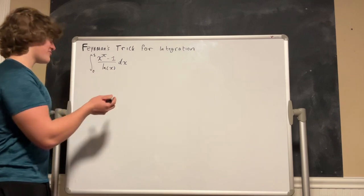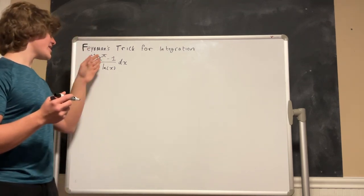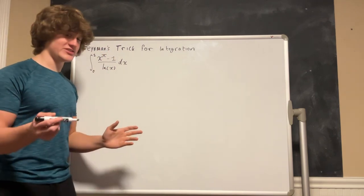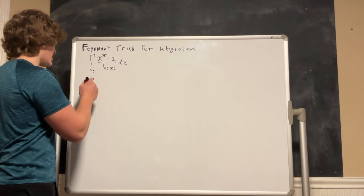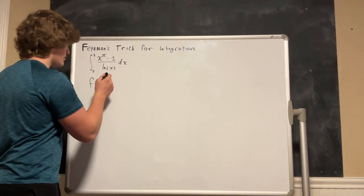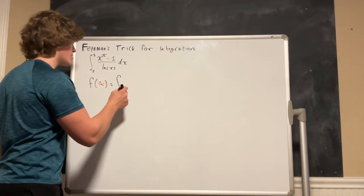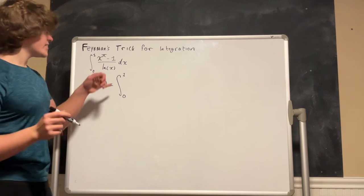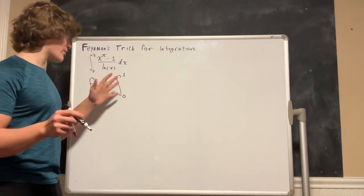So first off for Feynman's technique we are going to want to define a part of this equation as a variable of itself. So we are going to make a new function which I will call f of a variable alpha which is equal to the integral from 0 to 1 of our function. Now we need to choose one of anything in this equation to be our alpha.